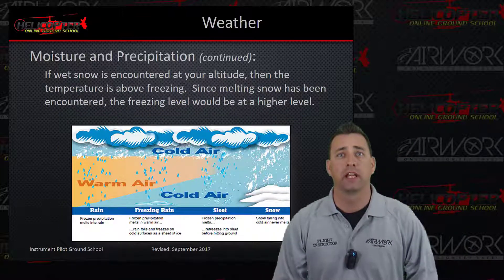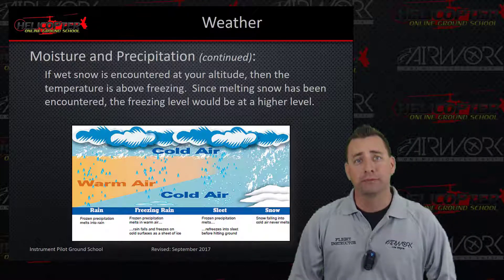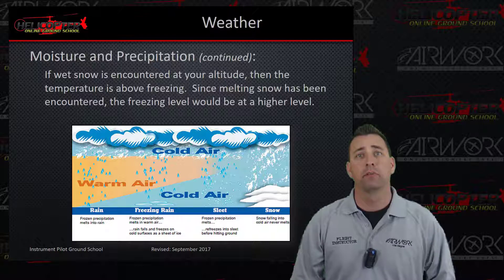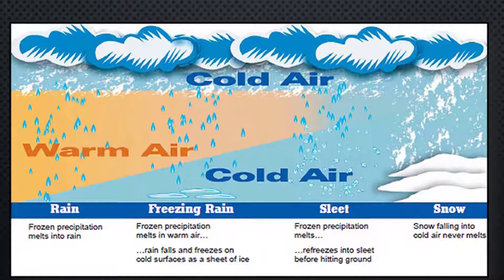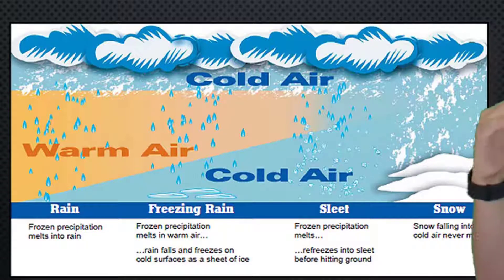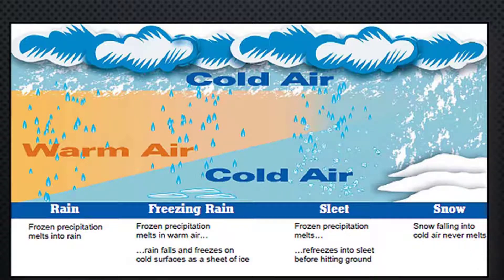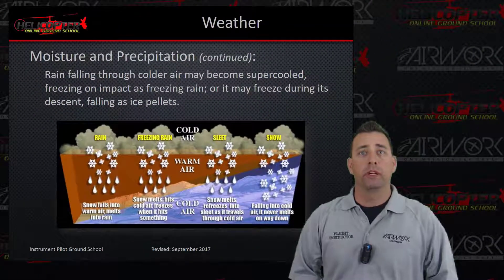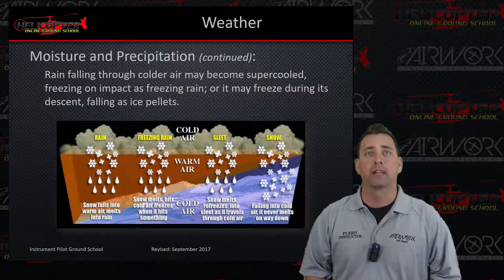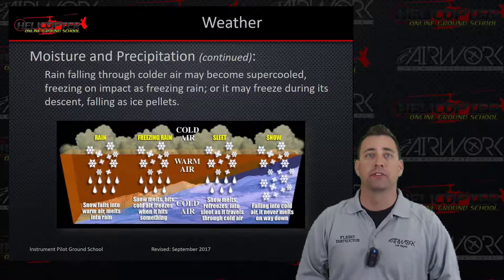If wet snow is encountered at your altitude, then the temperature is above freezing. Since melting snow has been encountered, the freezing level would be at a higher level. Looking at this graph, we've got cold air up above, then a warm area where you're flying, then cold air underneath. As moisture falls out of that cold air into the warmer air, it will start to melt. If it hits your aircraft, it will produce freezing rain, sleet, or similar hazards. Rain falling through the colder air may become super-cooled, freezing on impact as freezing rain, or it may freeze during its descent, falling as ice pellets.